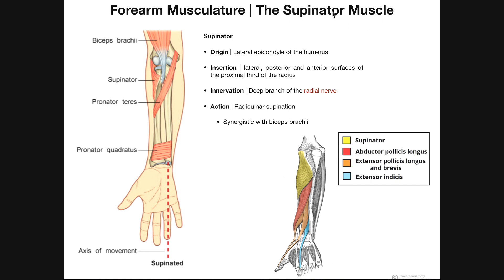which is a muscle located in the anterior lateral forearm involved in supinating the hand. The second thing we'll talk about is the difference between pronation and supination — what they are and what's going on between the radius and the ulna.